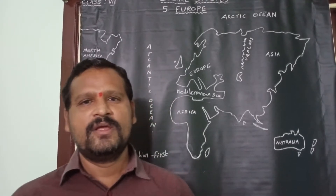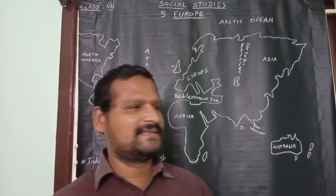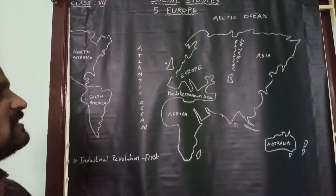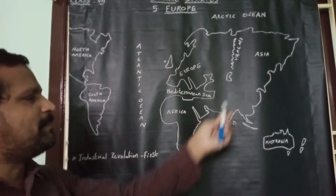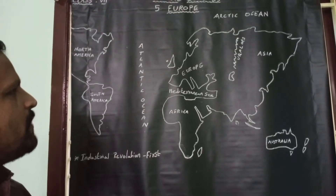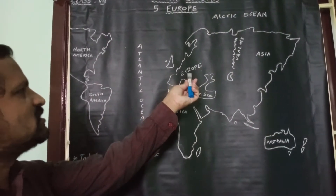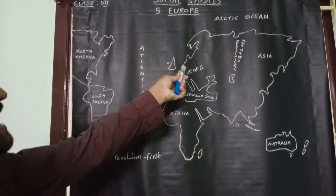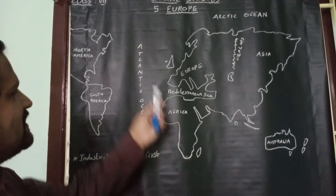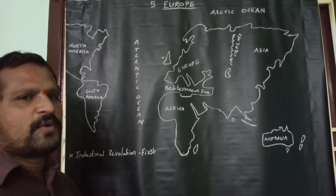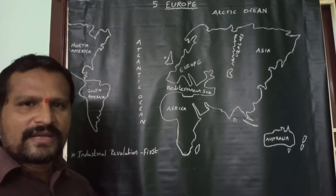Children, first we discuss about the location of Europe — where is Europe located? If you have a globe or atlas, please refer to it. I'll use my blackboard; in this blackboard I have drawn a world map. Let us point out where the Europe continent is located.